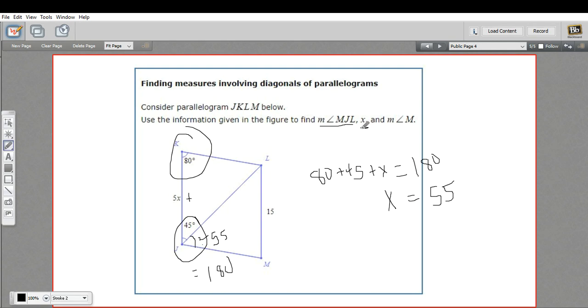Okay, let's see if we can find x next. The property we're going to use here is that the opposite sides of a parallelogram are congruent. So I can say 5x equals 15, and we solve for x by dividing by 5. We just get x equals 3. So x is 3 there.